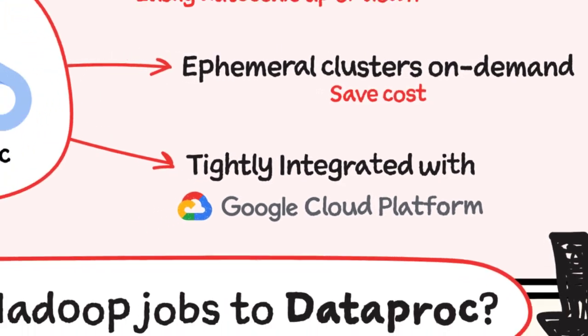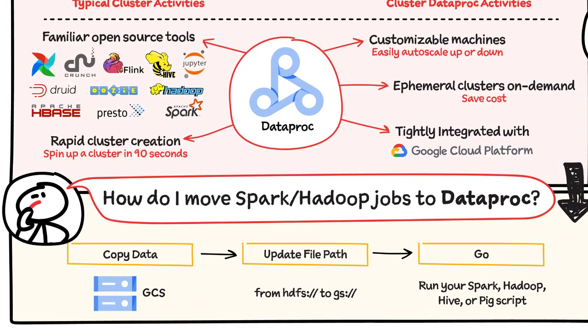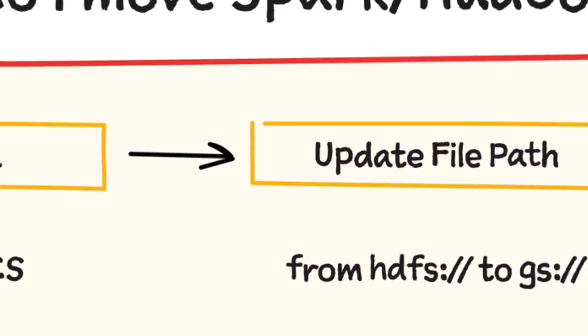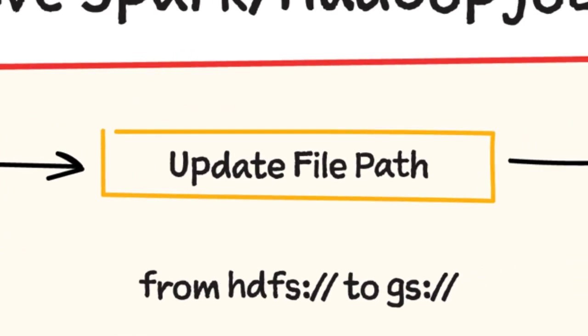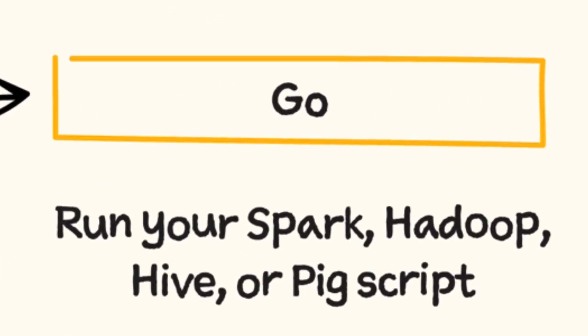To move your Hadoop or Spark jobs, all you do is copy your data into Google Cloud Storage, update your file paths from HDFS to GS, and you are ready to go.